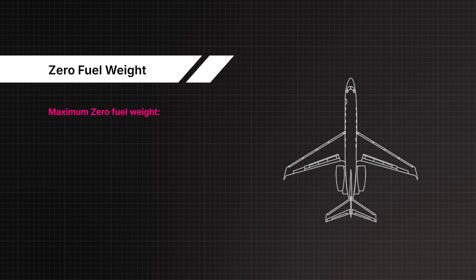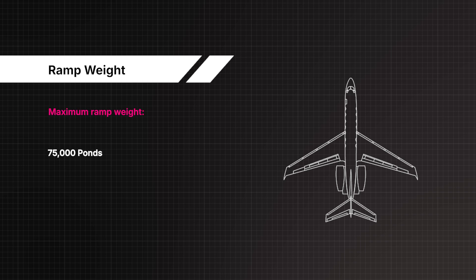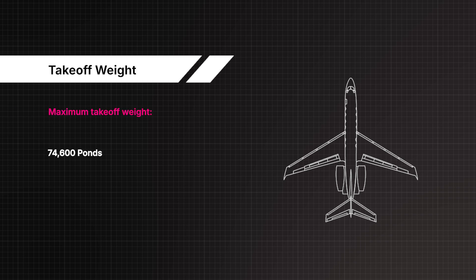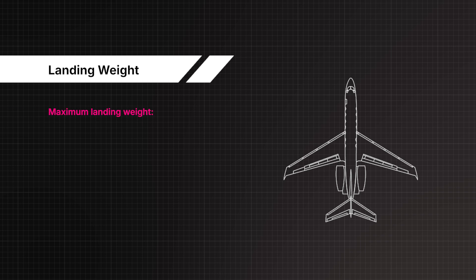Maximum zero fuel weight: 49,000 pounds. Maximum ramp weight: 75,000 pounds. Maximum take-off weight: 74,600 pounds. Maximum landing weight: 66,000 pounds.